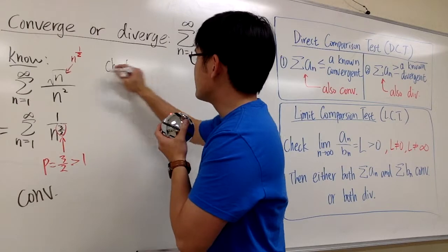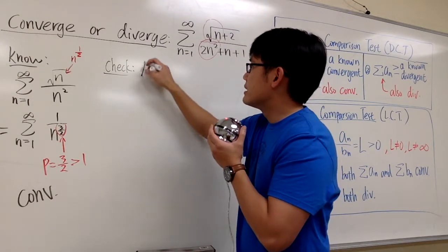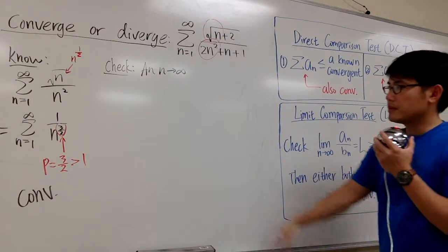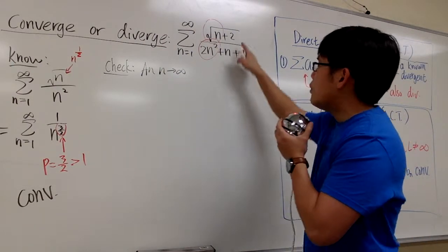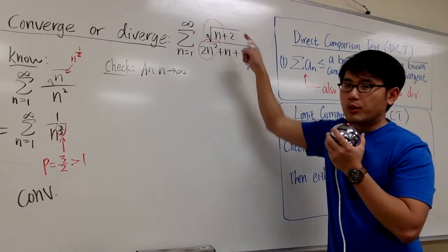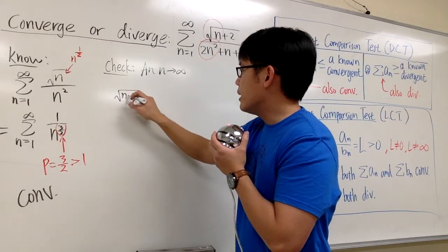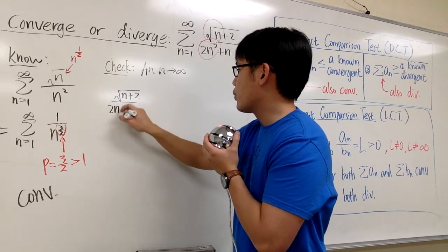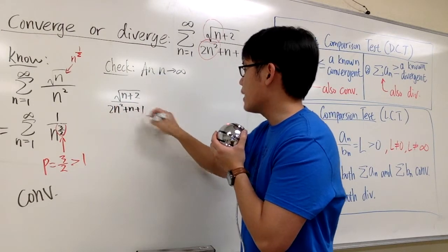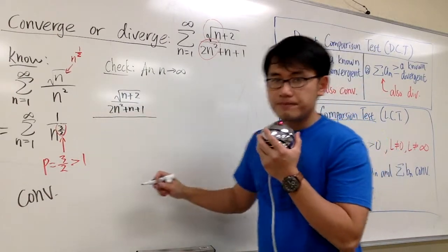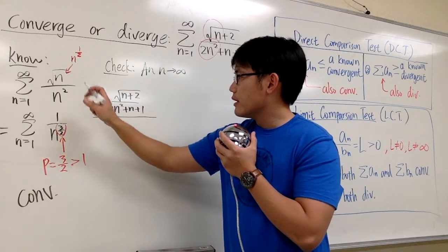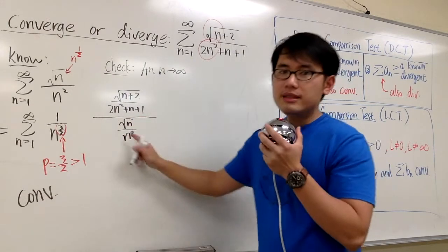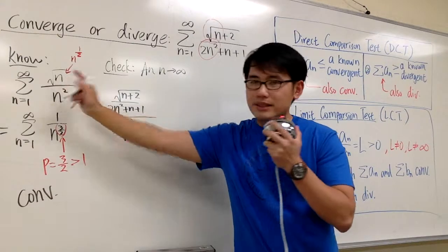For the limit comparison test, we are going to check as n goes to infinity, because we have to check the limit. I will put down a_n, which is the original, on the top: square root of n plus 2 over 2n squared plus n plus 1, and then over that, square root of n over n squared. This is the formula we use, right? Something that we know.